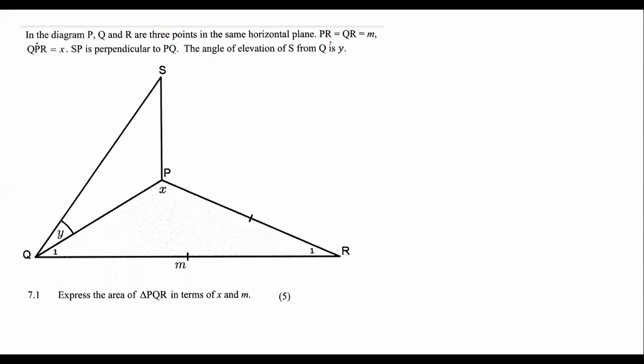In the diagram, P, Q, and R are three points in the same horizontal plane. PQ is, PR is equal to QR, which is equal to M.